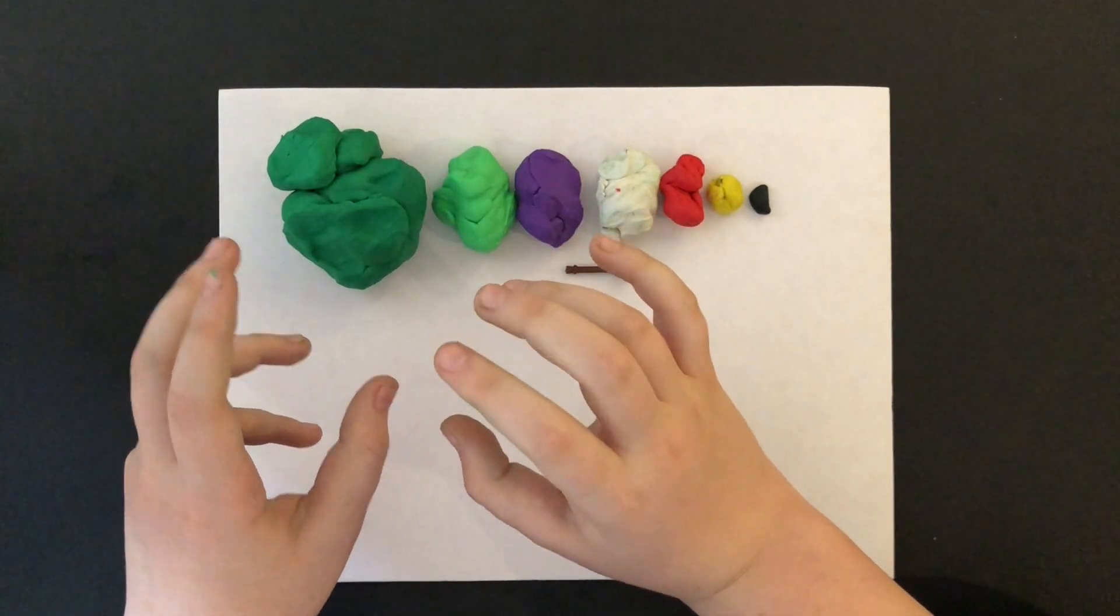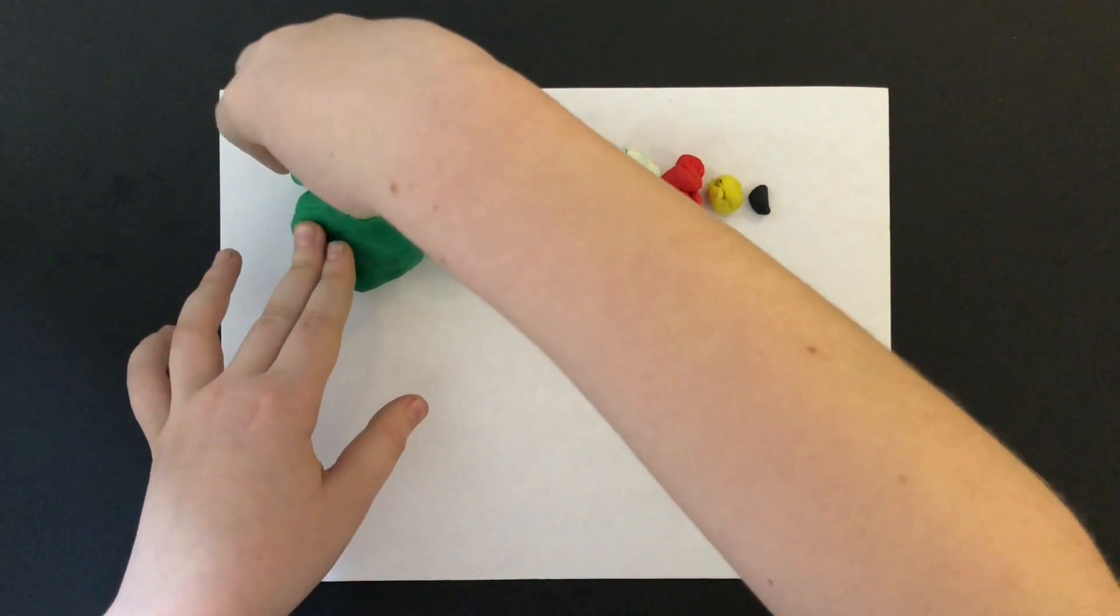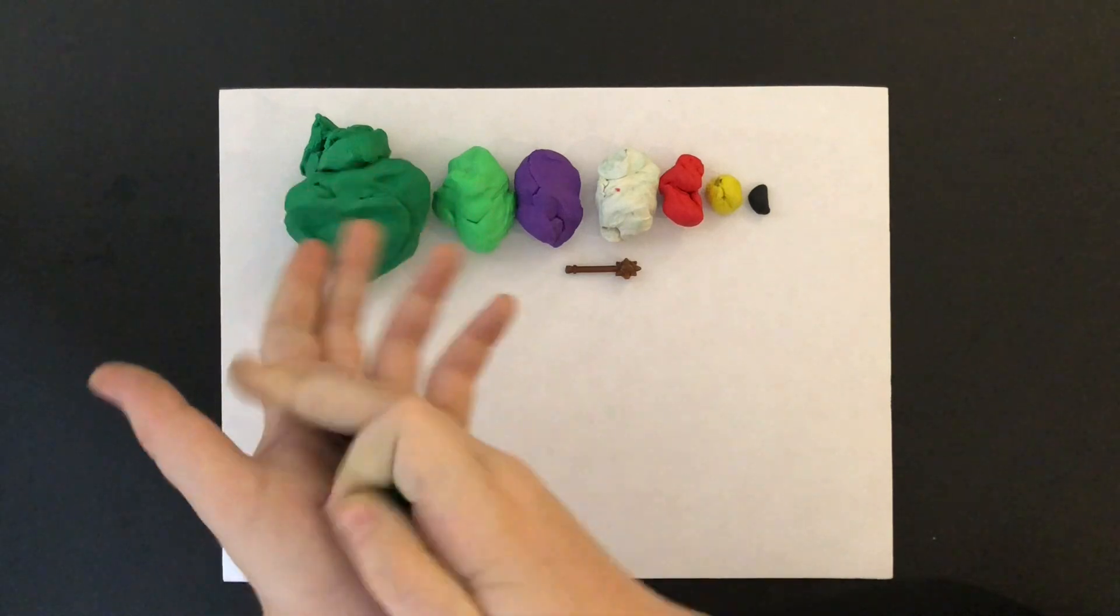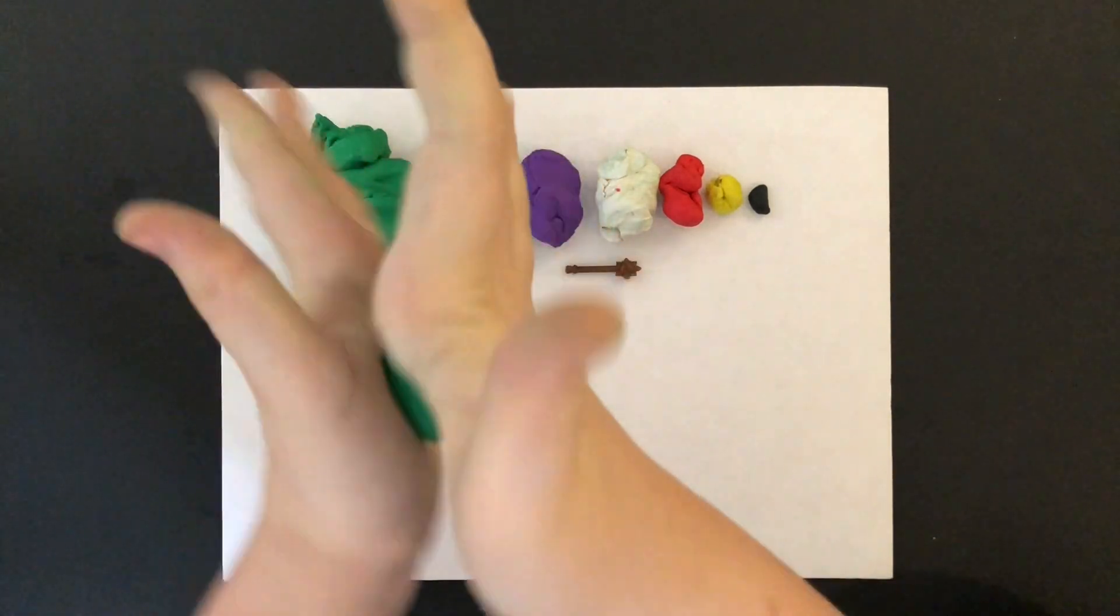To start off, I will be making a dragon's head first. So I grab a piece of dark green and I roll it a couple of times in my hands to make it softer.